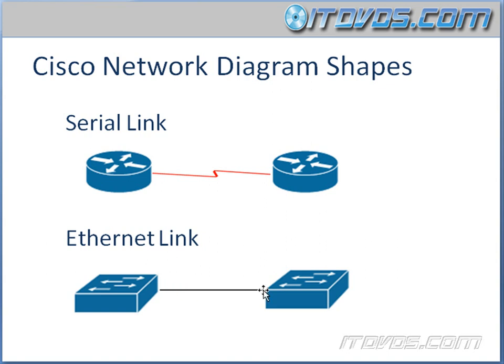An ethernet link is normally a black straight line. So this was a very basic overview to get us used to certain terminology. Now let's get into it a little bit more.